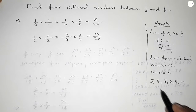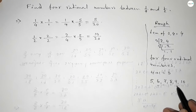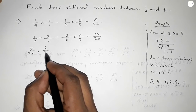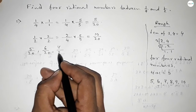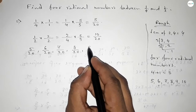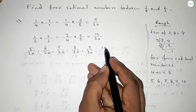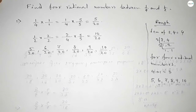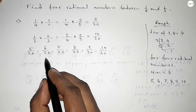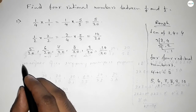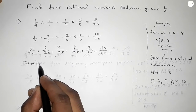Now between five and ten we can find four natural numbers, and from these natural numbers we can form four rational numbers. So all the rational numbers are: five over twenty, six over twenty, seven over twenty, eight over twenty, nine over twenty, and ten over twenty.